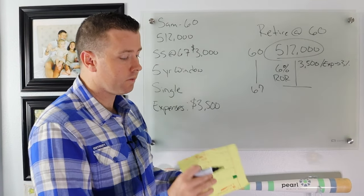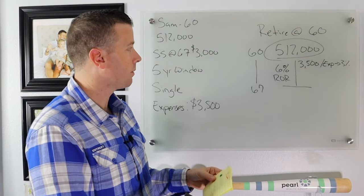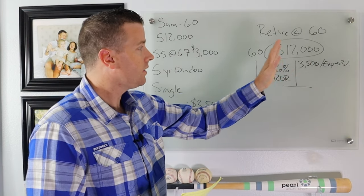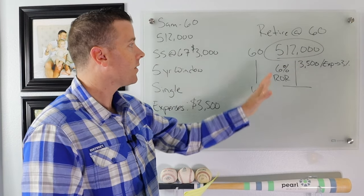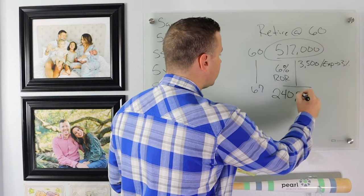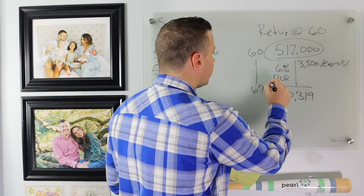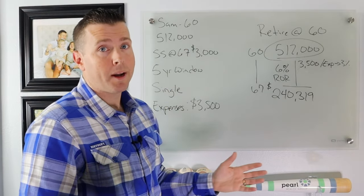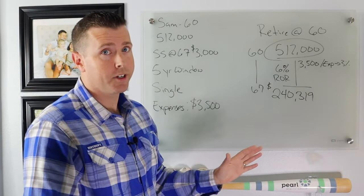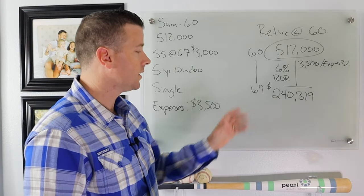Now we've got $512,000 saved for retirement. We're going to take out $3,500 a month with inflation. So at 67, our $512,000 actually falls to $240,319. So we're less about $250,000 from where we started, which is not good over a seven-year period.